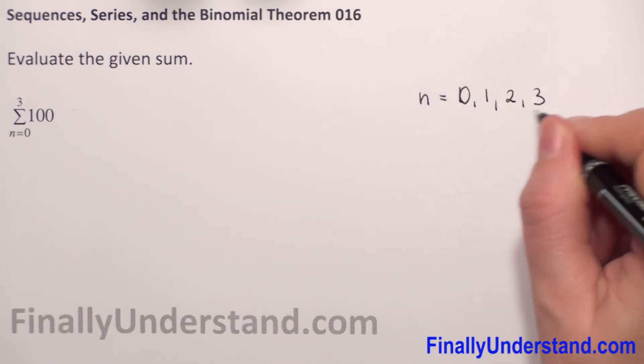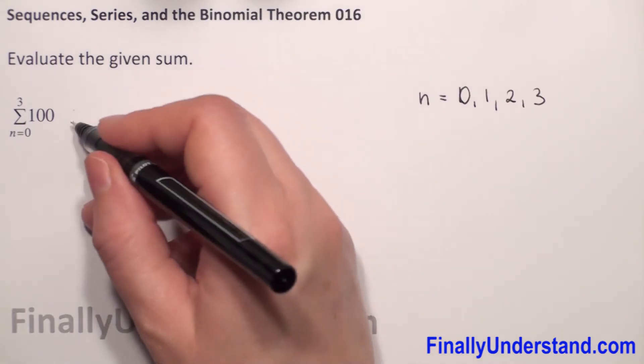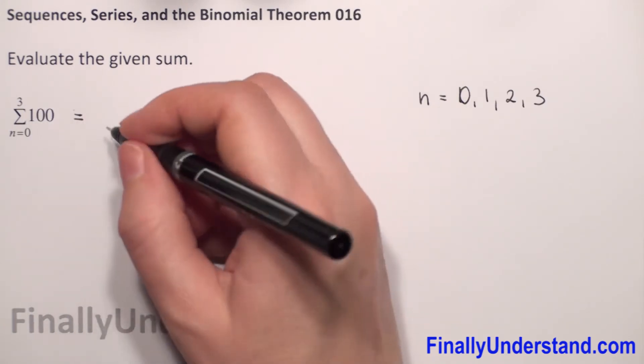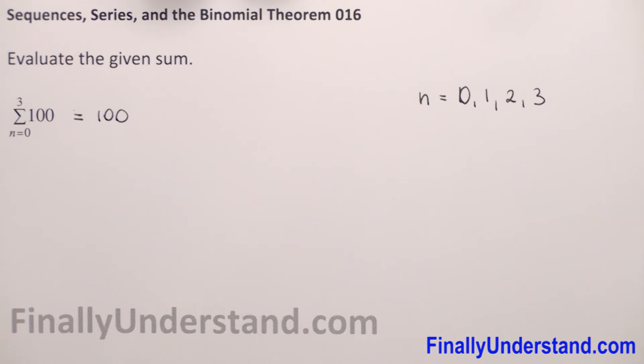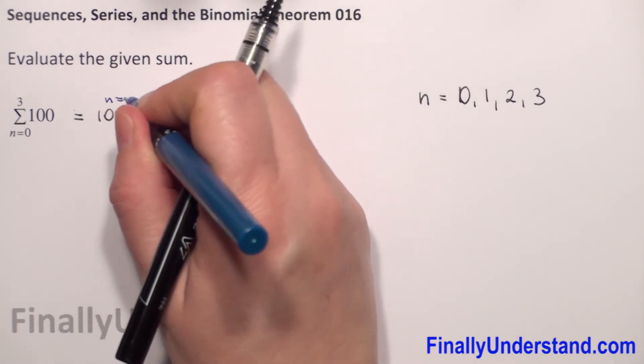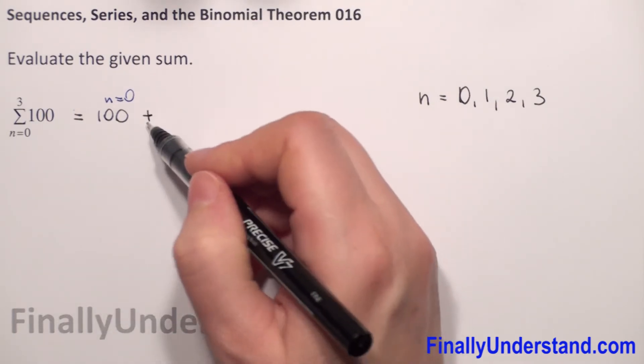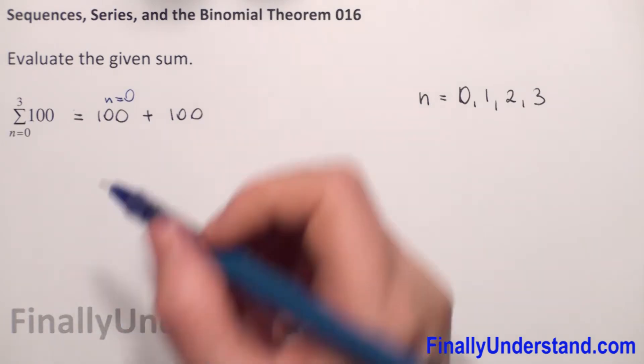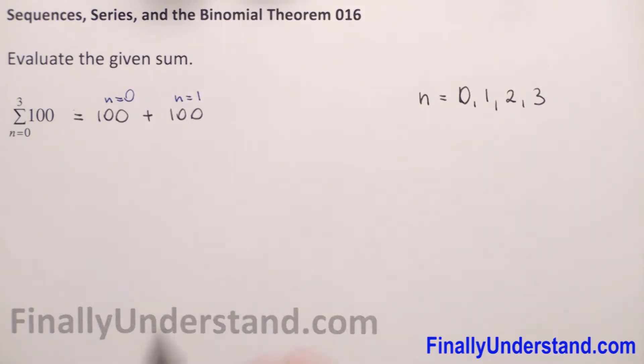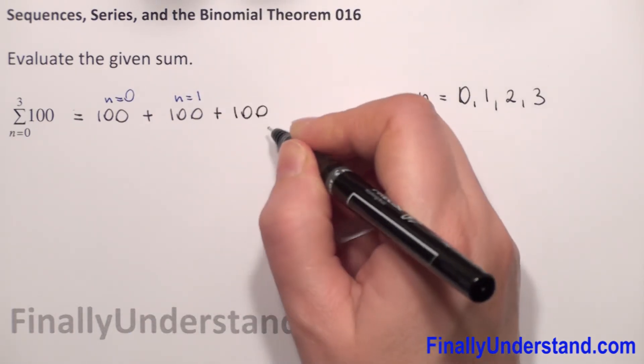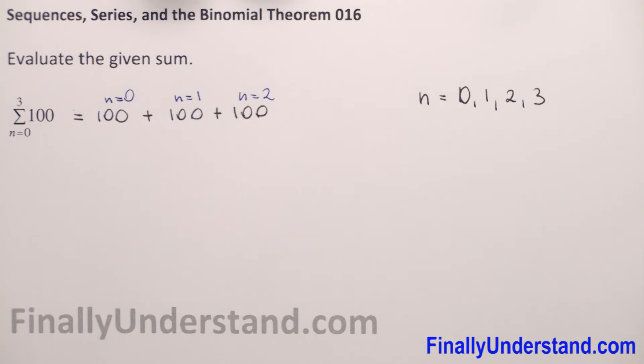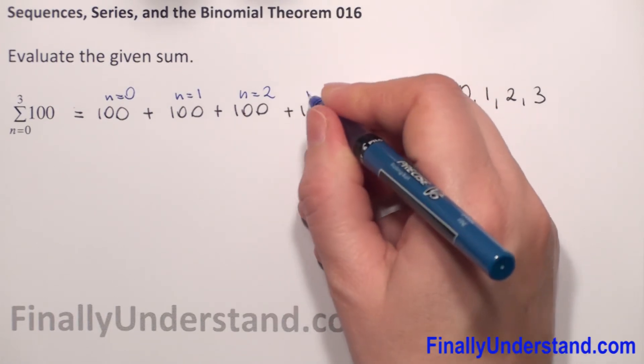So this is equal to the sum of 100. We don't have any n here, so we just copy 100. This is for n equals 0. Next, we have plus 100 for n equals 1, plus 100 for n equals 2, and plus 100 for n equals 3.